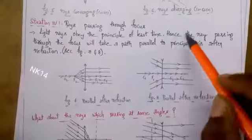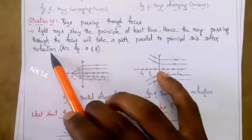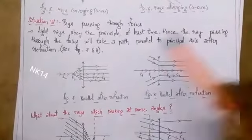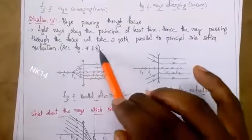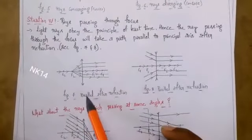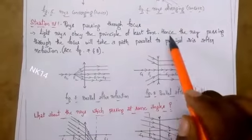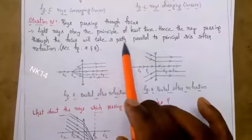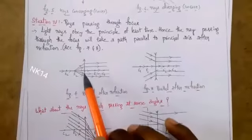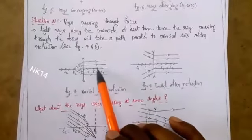Light rays obey the principle of least time — light always chooses the least possible time to reach its destination. Rays passing through the focal point will take a path parallel to the principal axis after refraction, as shown in figures 7 and 8. This applies to both convex and concave lenses — after refraction, these rays emerge parallel to the principal axis.